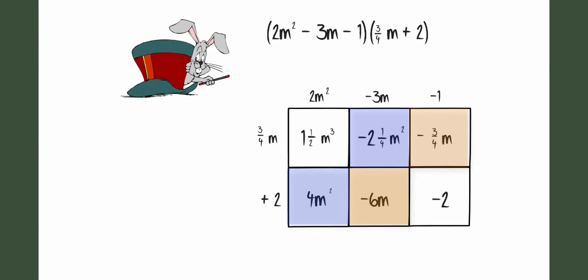When I am totaling this up, I need to make sure I combine my like terms. This would give me a final answer of 1 and a half m to the third plus 1 and 3 fourths m squared minus 6 and 3 fourths m minus 2.